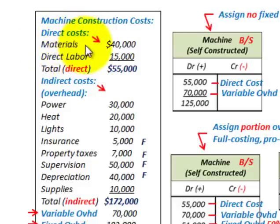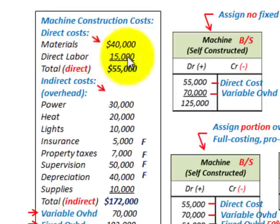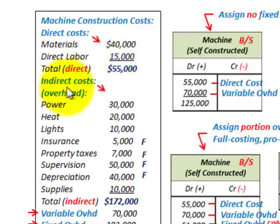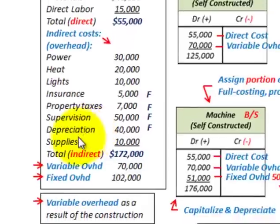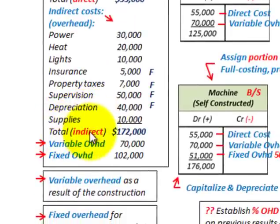Our direct costs include materials and direct labor, and our total direct costs in this case were $55,000. For our indirect costs — our overhead costs — those would typically include power, heat, lights, insurance, property taxes, supervision, depreciation, and supplies. Our total indirect costs are $172,000 for this example.